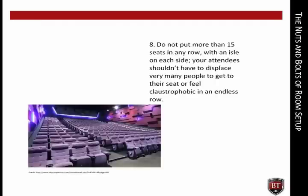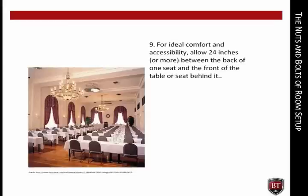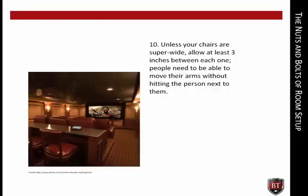Do not put more than 15 seats in any row with an aisle on each side. Your attendees shouldn't have to displace very many people to get to their seat or feel claustrophobic in an endless row. For ideal comfort and accessibility, allow 24 inches or more between the back of one seat and the front of the table or seat behind it. Although fire regulations allow for just 12 inches, human beings are getting bigger and anything less than 24 inches is just plain uncomfortable. Unless your chairs are super wide, allow at least 3 inches between each one — people need to be able to move their arms without hitting the person next to them.